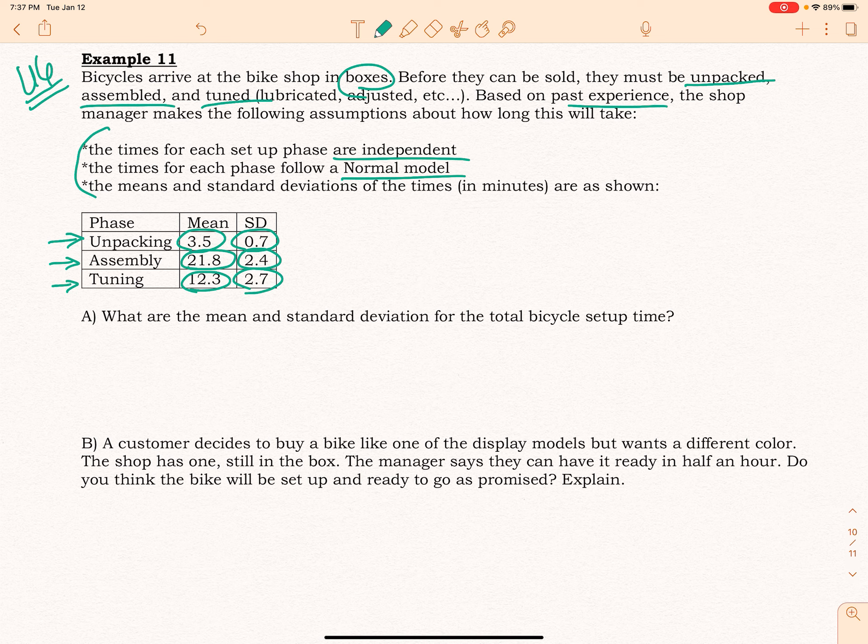Just as you can transform one normal model and it becomes another normal model, the same thing occurs when we are looking at a combination. If you're combining normal models, you're going to get a normal model.